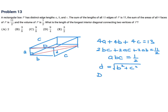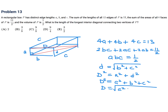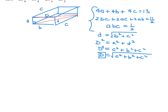So D² = a² + b² + c², and D = √(a² + b² + c²). We're trying to find D using the three given equations: 4(a + b + c) = 13, 2(ab + ac + bc) = 11/2, and abc = 1/2. We need to find a² + b² + c².